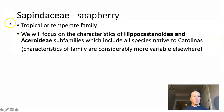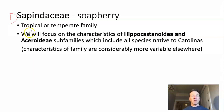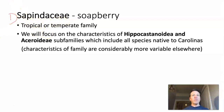Our first family is the Sapindaceae, or the soapberry family. This family is largely tropical or temperate, and we'll focus on temperate members occurring in the Carolinas. Rather than describing the whole family — which would be variable for almost every characteristic — we'll focus on two subfamilies: the Hippocastanoideae and the Aceroideae, as your textbook defines them.